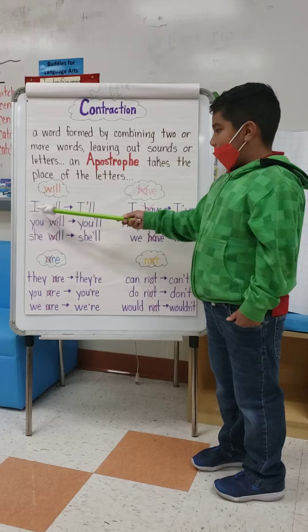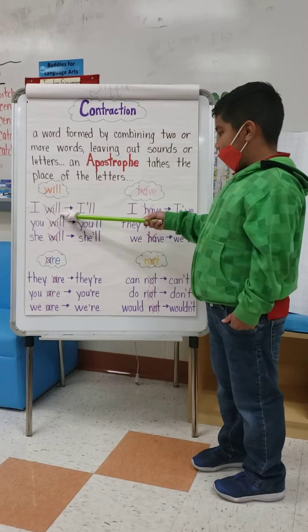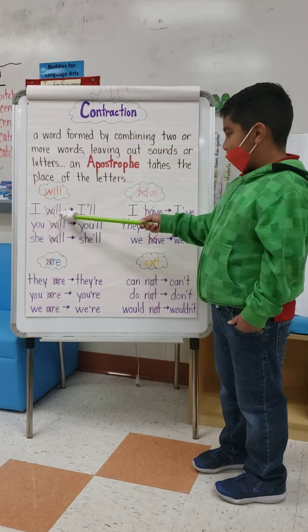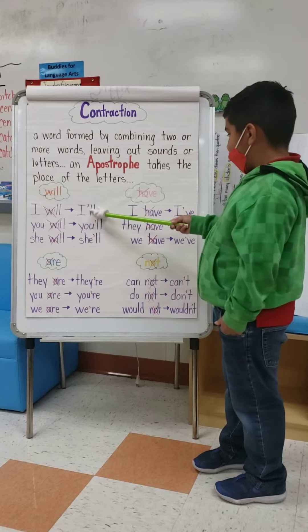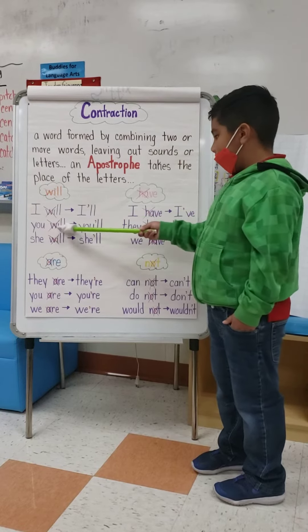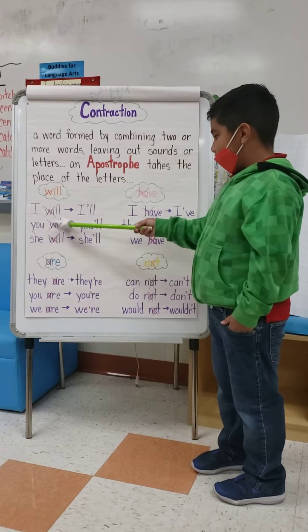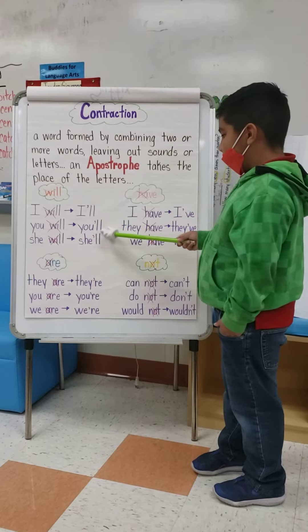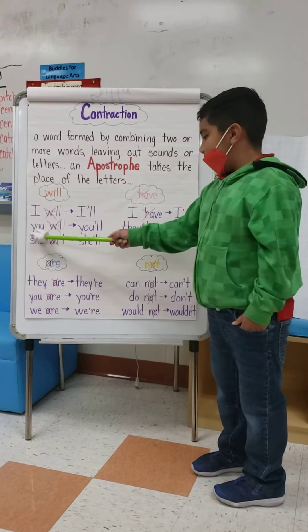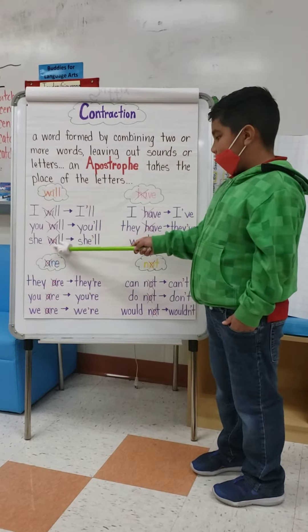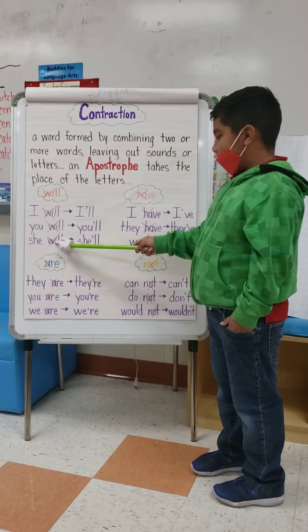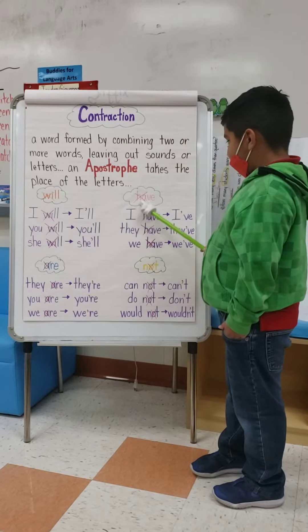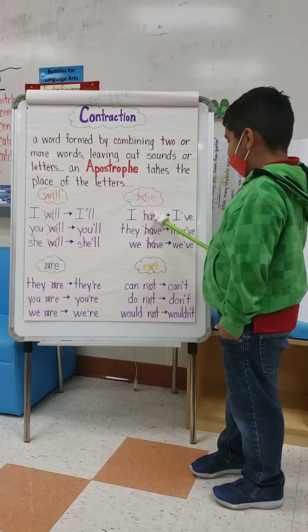Will — 'I will' loses the W-I and turns into 'I'll'. 'You will' loses the W-I and turns into 'you'll'. 'She will' loses the W-I and turns into 'she'll'. And then we have 'to have'.